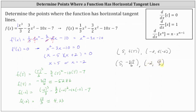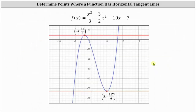These are the two points where the given function has horizontal tangent lines. Let's verify this graphically. The graph of the cubic function is shown in blue, and we can see two points where the function has horizontal tangent lines. On the left is the point (negative 2, 13/3), and on the right is the point (5, negative 317/6). I hope you found this helpful.